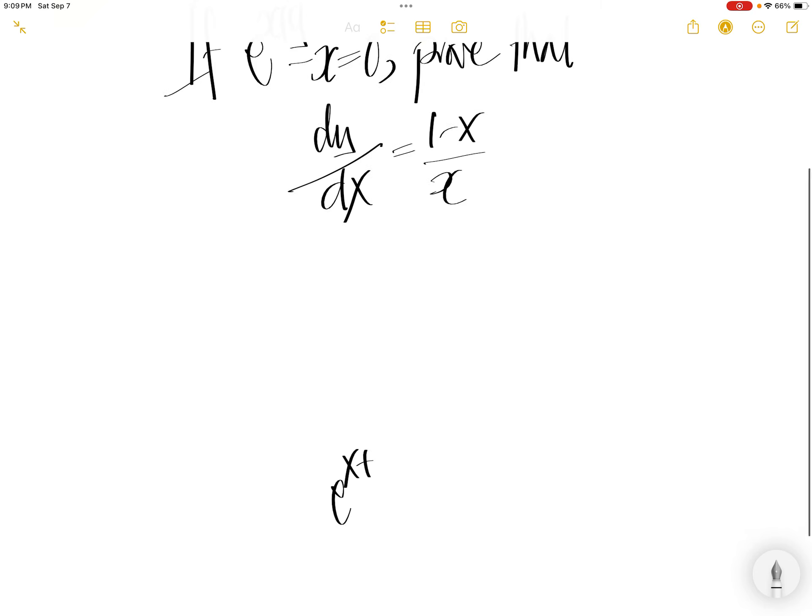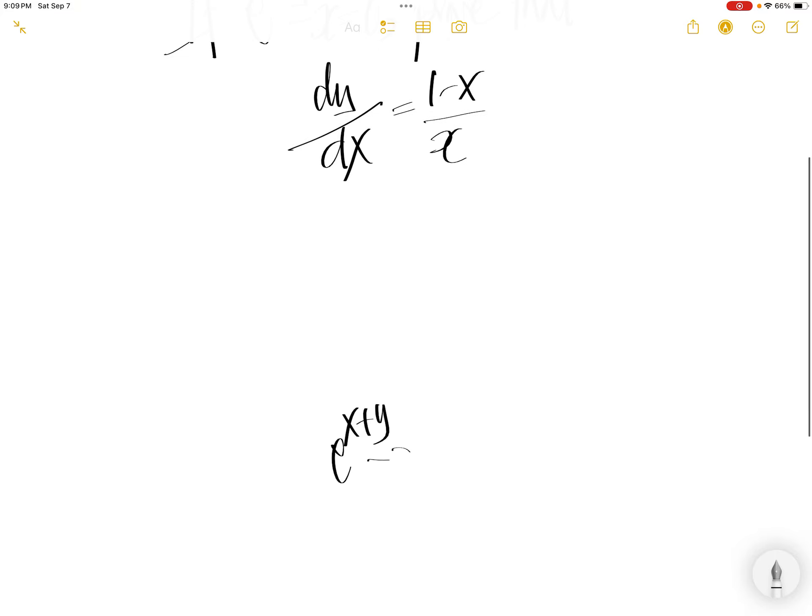So we have e to the power x plus y minus x equal to 0. Let us take the derivative with respect to x on this line.